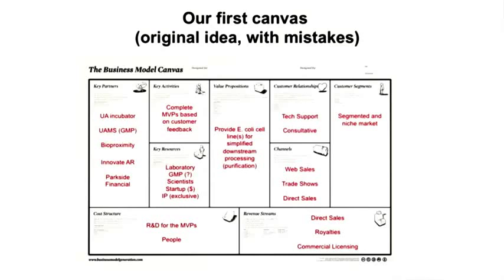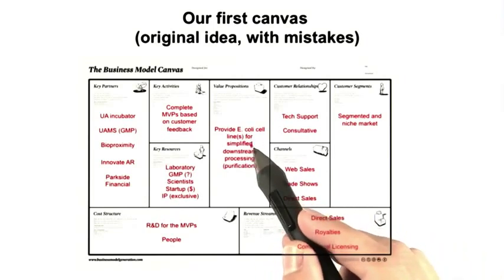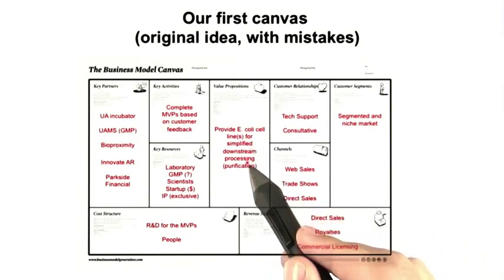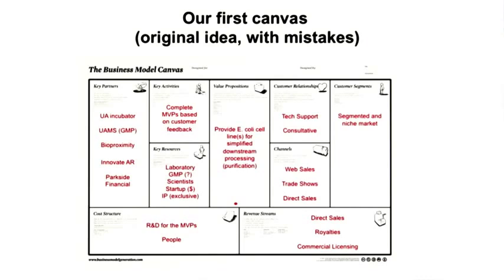Google search was a very simple multi-sided market — just two sides: there were users and there were payers. But can a canvas actually work with something more complicated, like in life sciences? Here's an example of a business model canvas from a life sciences company that was going to provide E. coli cell lines for simplified downstream processing.